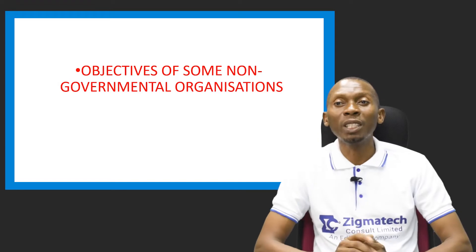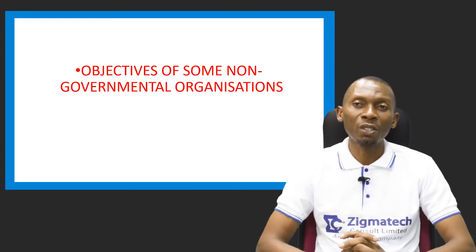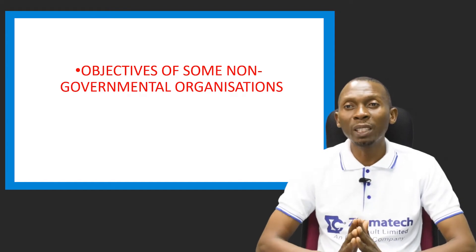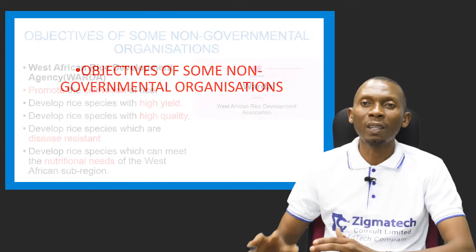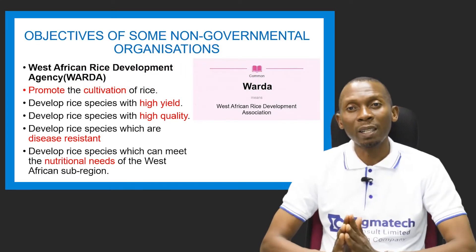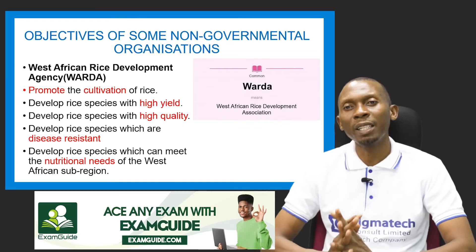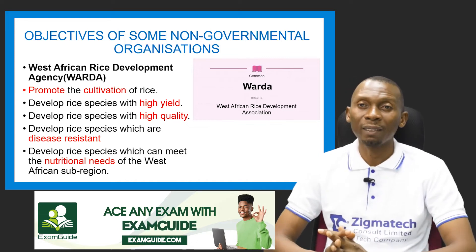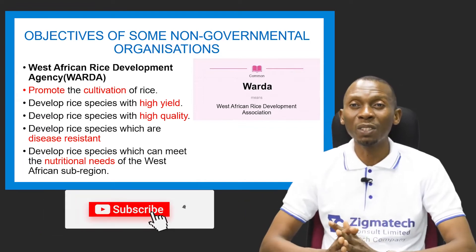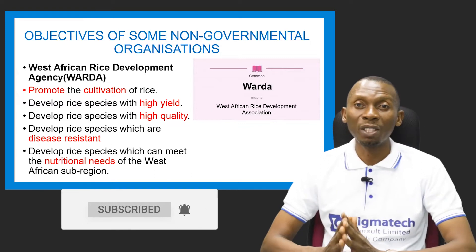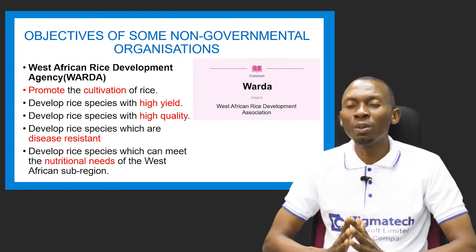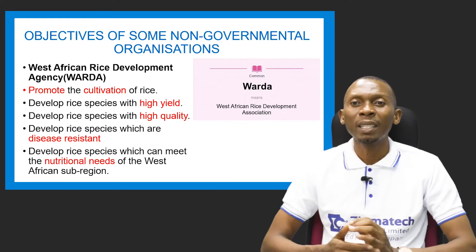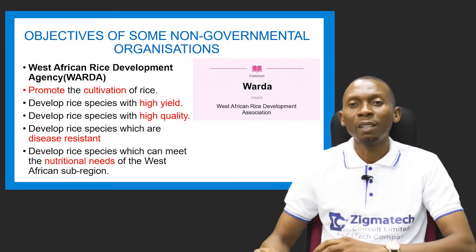Let's take a look at some of the objectives of some non-governmental organizations. Let's start with WARDA, W-A-R-D-A, which is West African Rice Development Agency. Its objectives are to promote the cultivation of rice, to develop species with high yield and high quality disease resistance, and also to meet the nutritional needs of the West African sub-region. Rice is a staple food, both locally and globally.